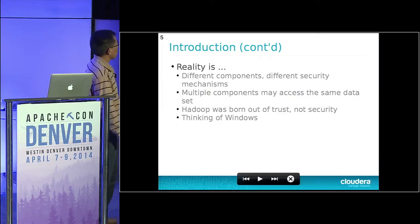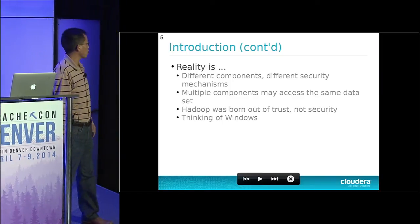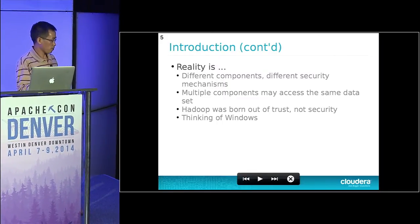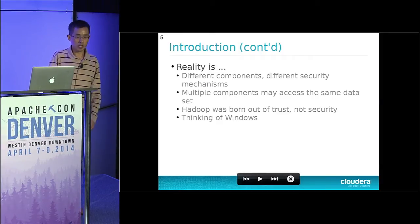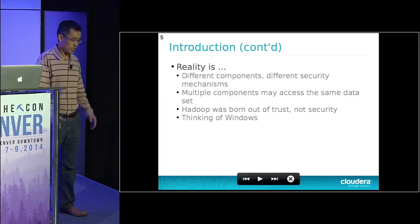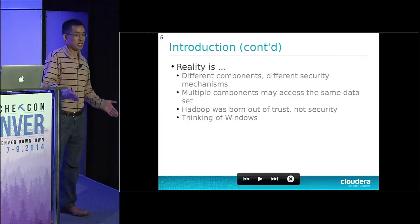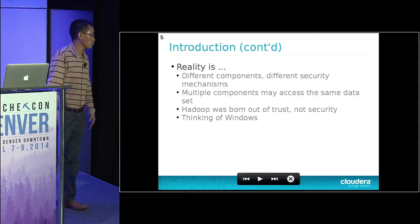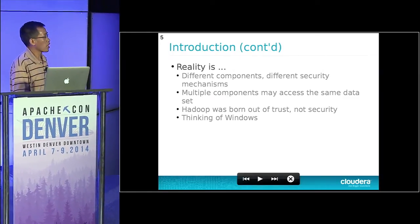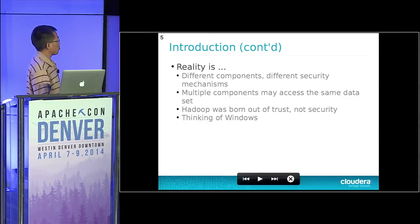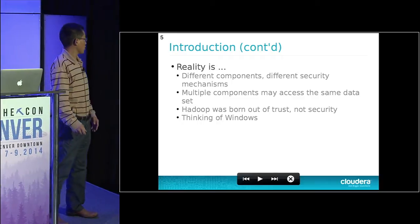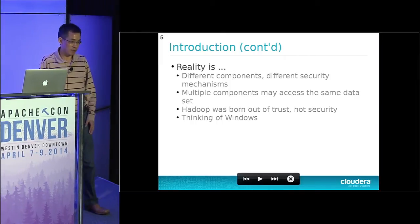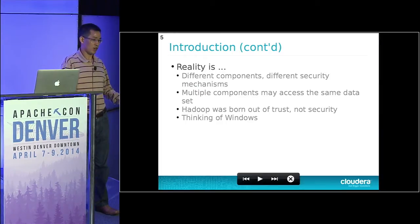Even after significant effort, different components still provide different security mechanisms. In the Hadoop system, the same data may be accessed by different applications. For example, a table in Hive is nothing but a directory on HDFS, but Hive is not the only application that can access that data — you can use MapReduce jobs, Apache Pig, or HCatalog as well. Since Hadoop was inherently unsecured, I would say Hadoop was born of trust, not security — much like Windows in its earlier stages.